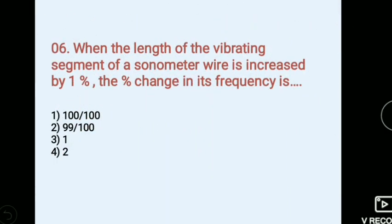When the length of the vibrating segment of a sonometer wire is increased by 1%, the percentage change in its frequency is. Options: 1) 100 by 101, 2) 99 by 100, 3) 1, 4) 2. Answer 1, 100 by 101.